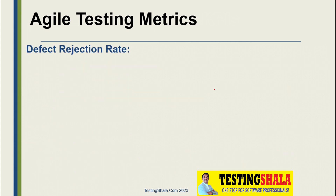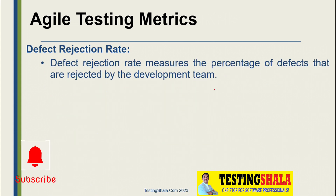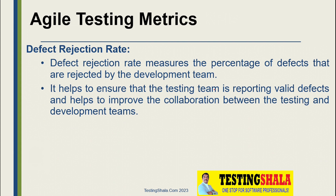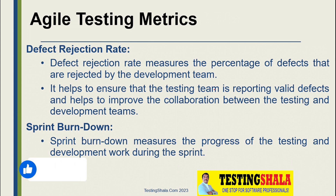The next metric is defect rejection ratio. This measures the percentage of defects that are rejected by the development team. A high defect rejection rate means our testing team may not be reporting valid defects or may lack proper knowledge about the application. We expect more collaboration between development and testing teams — if collaboration improves, the defect rejection rate will go down.